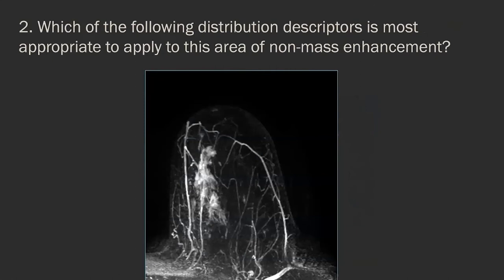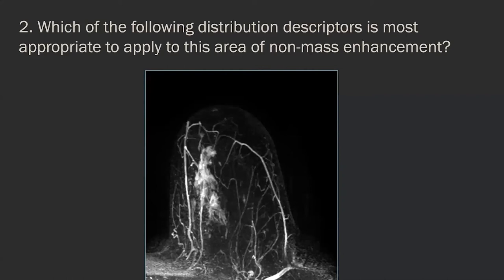Next poll: which distribution descriptor best applies to this area of non-mass enhancement? Focal, linear, segmental, regional, multiple regions, or diffuse? About half said segmental, and that's what I would call it — pretty much triangular with the wider base pointing towards the nipple. I wouldn't argue greatly with somebody who called it regional, which 25% did. My reason for calling it segmental is that segmental has a higher probability of malignancy than regional, and this looks concerning for a ductal distribution. It's too big to be focal and has more shape than linear.